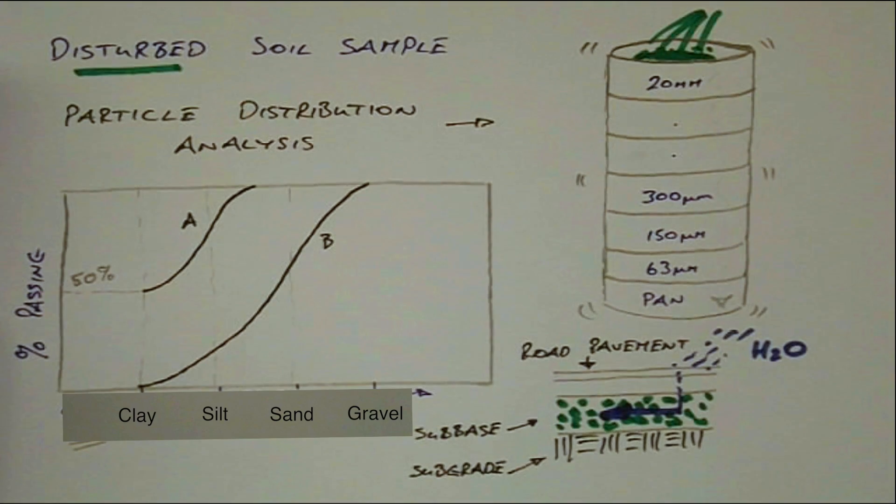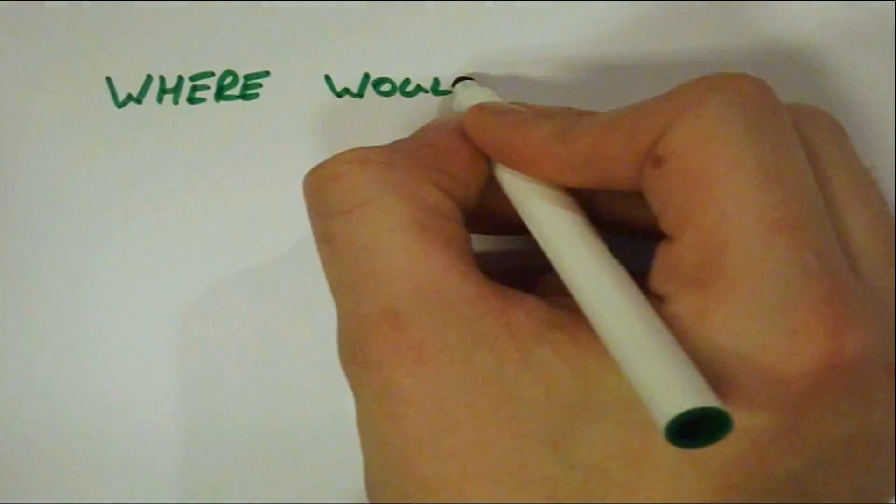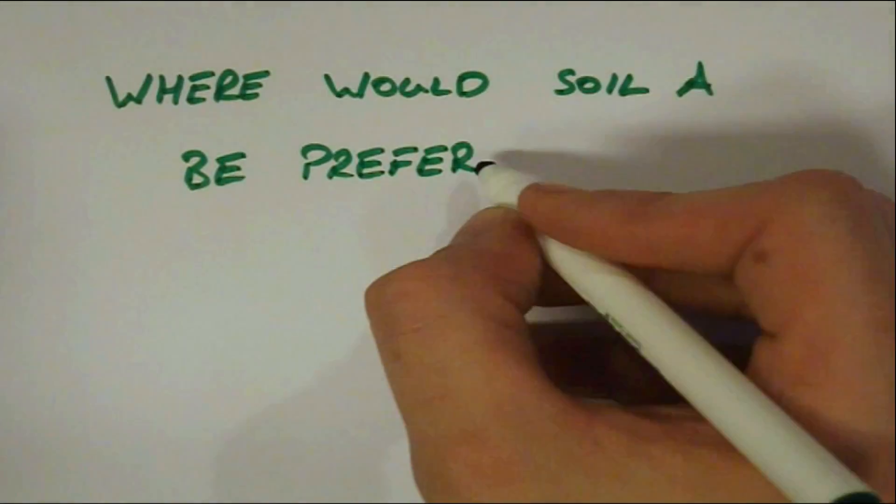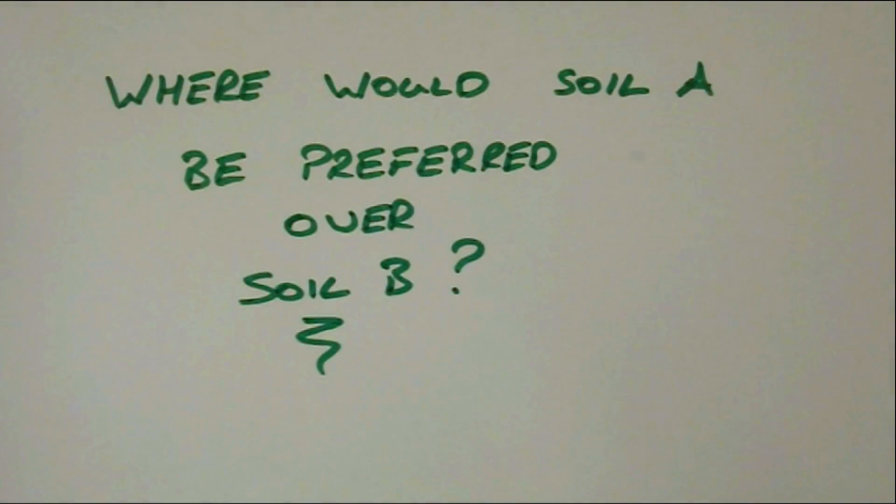It will also act as a capillary break between the pavement and subgrade. By the way, can you think of a construction project where soil A would be preferred over soil B and explain why?